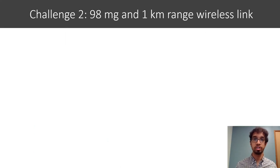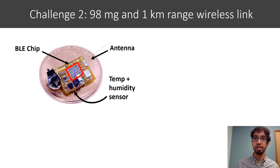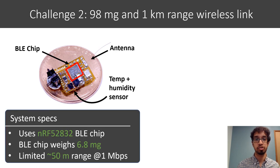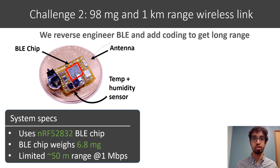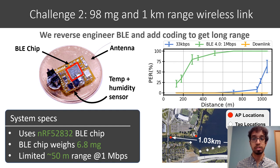The second challenge is if we're using drones to deploy sensors over a large area, we need a long range wireless uplink to send the data back. This small lightweight programmable Bluetooth chip weighs only 6.8 milligrams. The issue though is that it has a limited range when it's operating at one megabit per second. In this work, we show how we can extend the range of these Bluetooth chips by reverse engineering the protocol and changing the way they perform coding. I won't get into details, but by reducing the data rate to 33 kilobits per second, we can achieve distances of a kilometer.